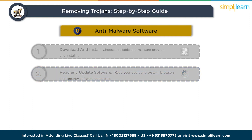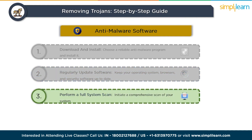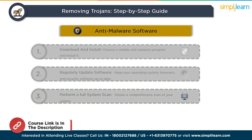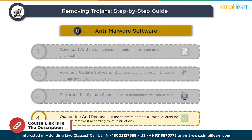Perform a comprehensive full system scan that checks all files, folders, and areas of your computer for any signs of malware, including trojans. This thorough examination is crucial to ensure that no traces of the trojan remain. If the software detects a trojan, quarantine it and then remove it according to the software's instructions. Quarantining isolates the suspected trojan from the rest of your system, preventing further harm, after which you can review the results and remove the threat completely.